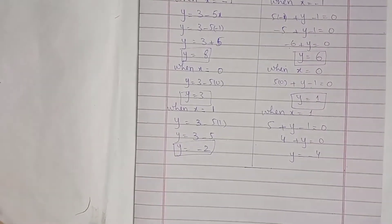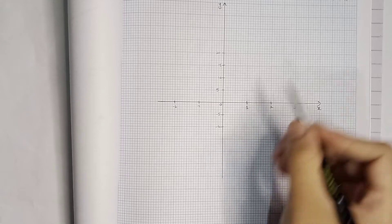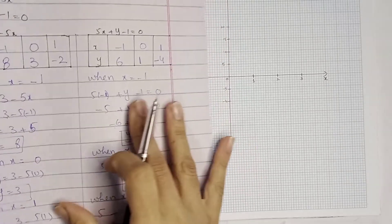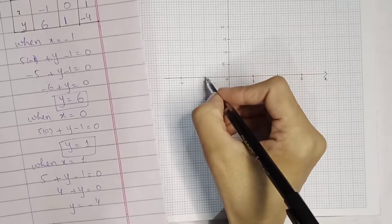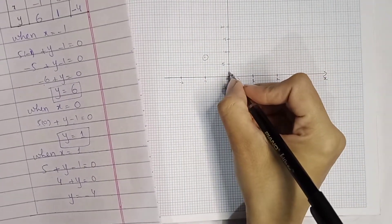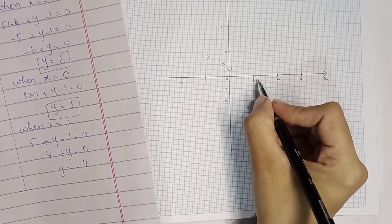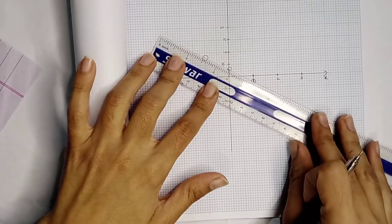Now we will draw the graph on graph paper. I have already drawn the scale on the graph paper: along the x-axis, 2 cm equals 1 unit, and along the y-axis, 1 cm equals 5 units. This scale is chosen because the y values go as high as 8 while x values are smaller. At x equals minus 1, y is 8; at x equals 0, y is 3; at x equals 1, y is minus 2.